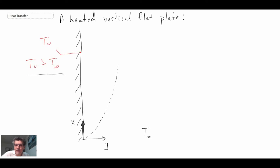Just like we saw for the flat plate with forced convection, we go through a transition process where we go from laminar and then we move into a turbulent boundary layer that is on the surface.